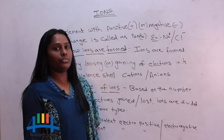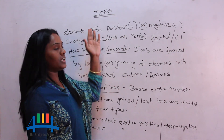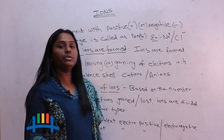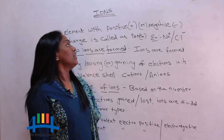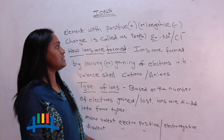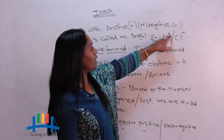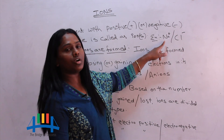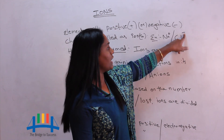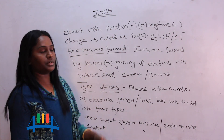Hello everyone, today we are going to learn about ions and their formation. What is meant by an ion? An ion is an element with a positive or negative sign. An element with a positive sign is called a cation, and an element with a negative sign is called an anion. For example, sodium with a positive sign is a cation, and chlorine with a negative sign is an anion.